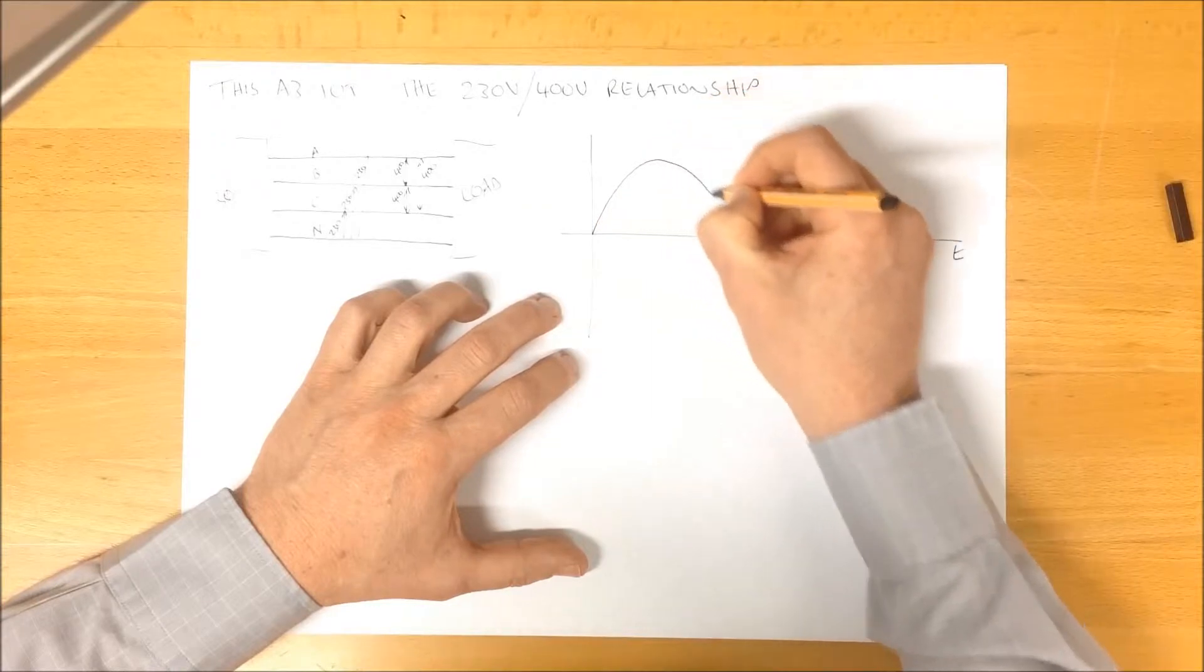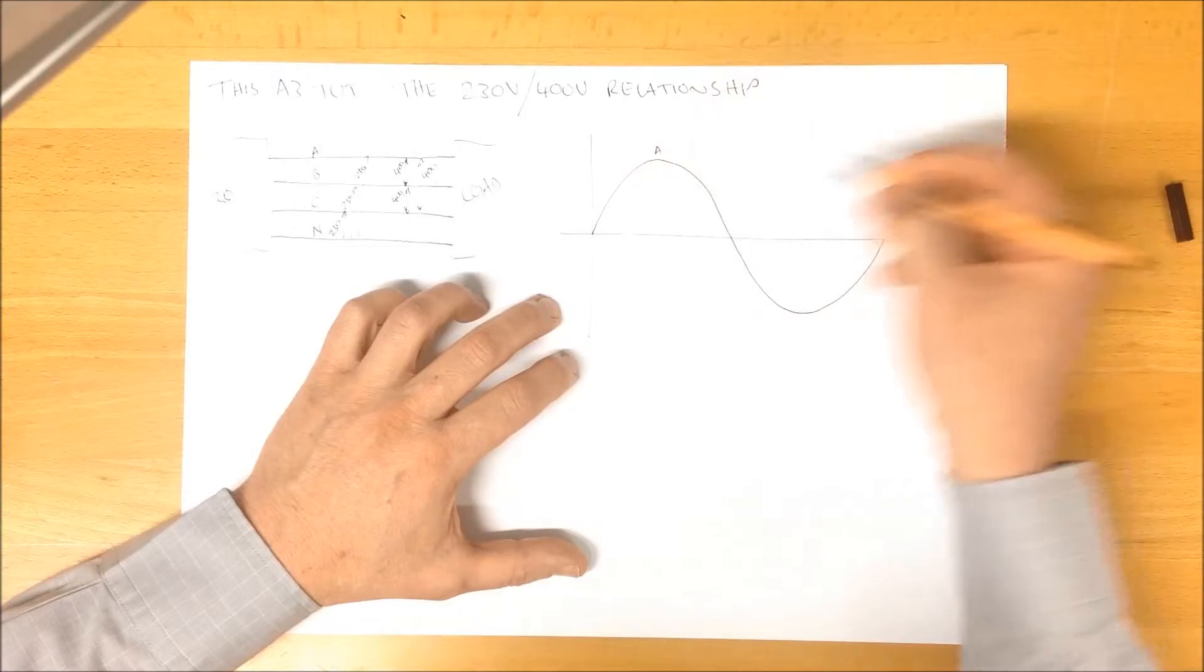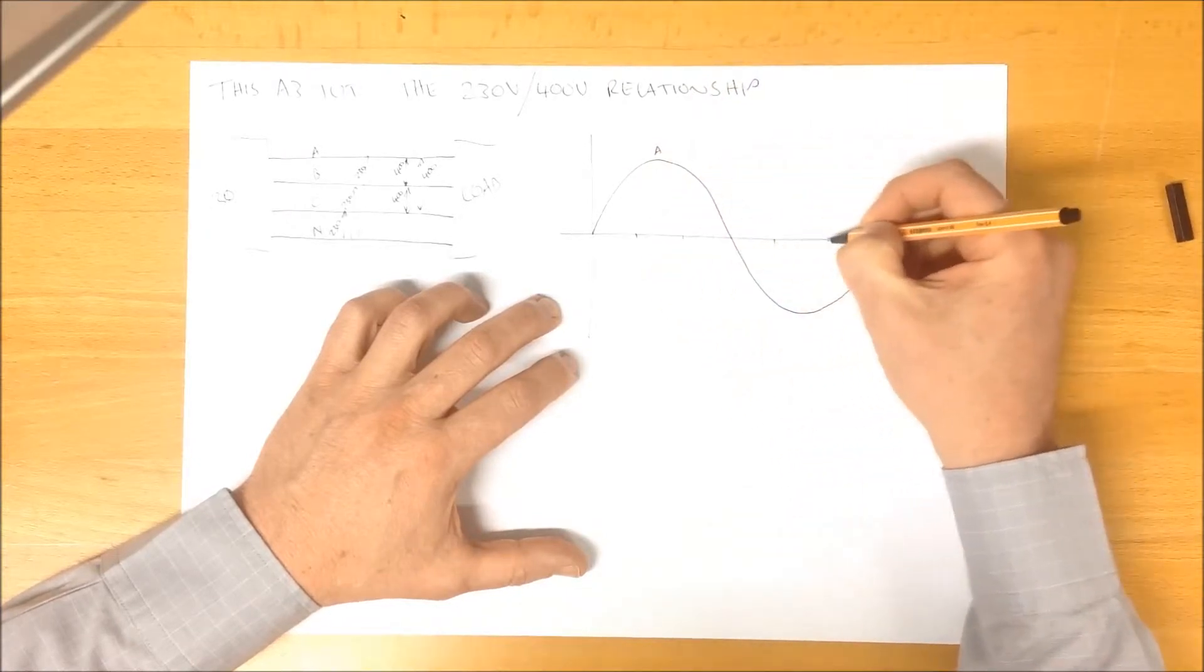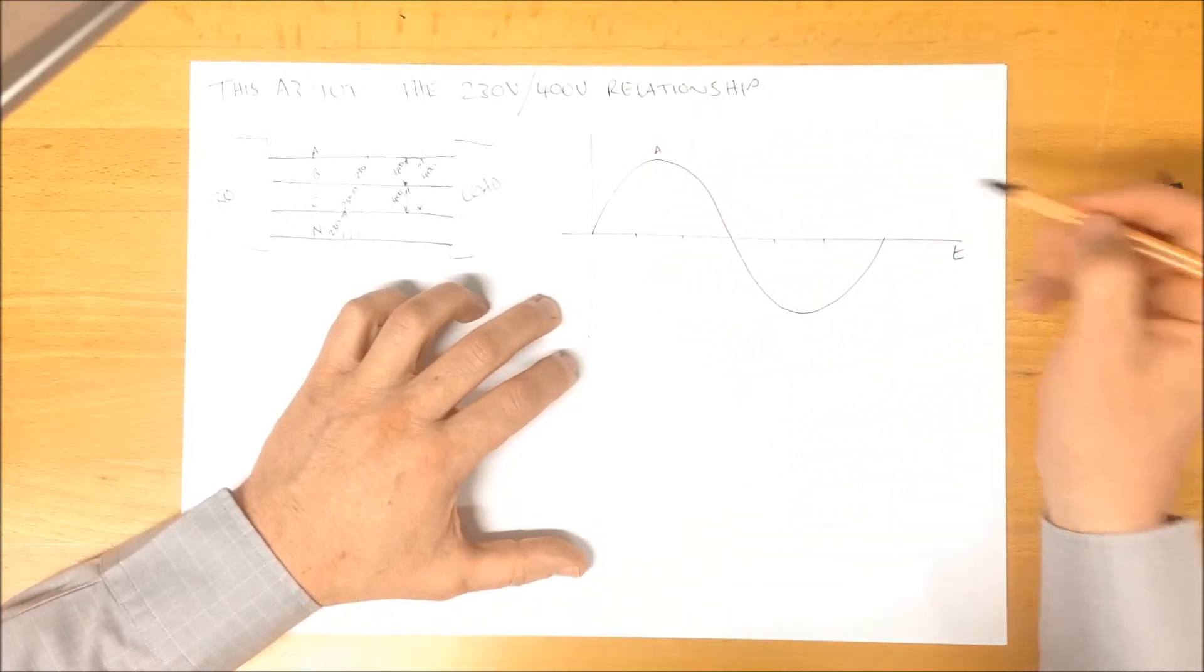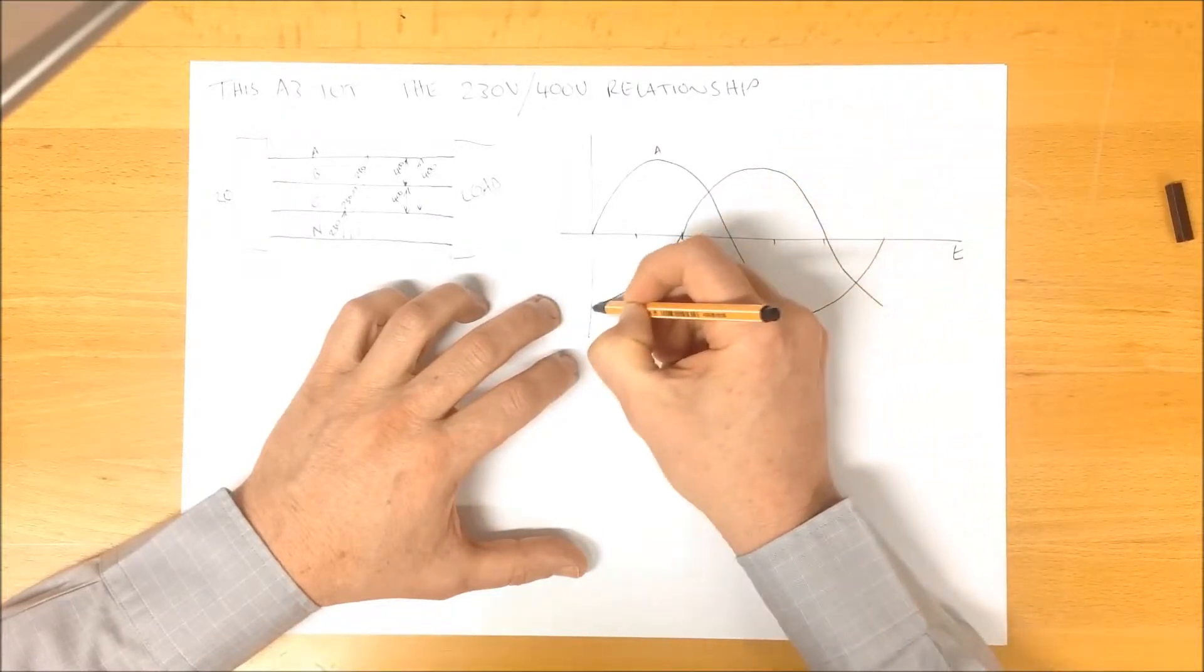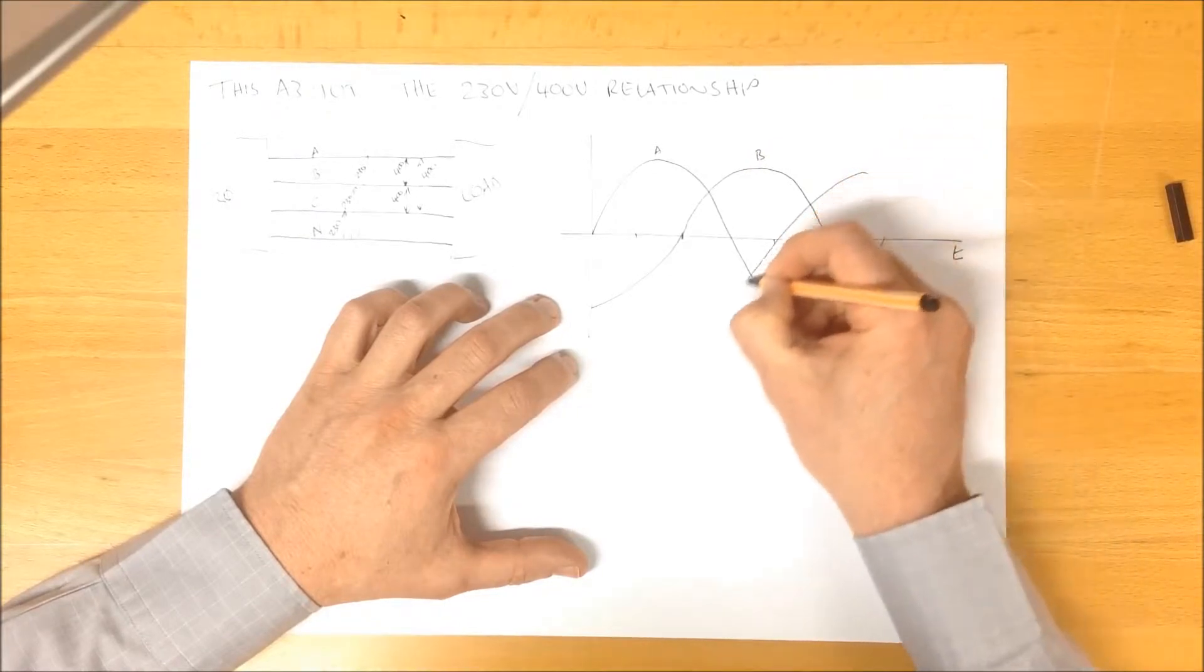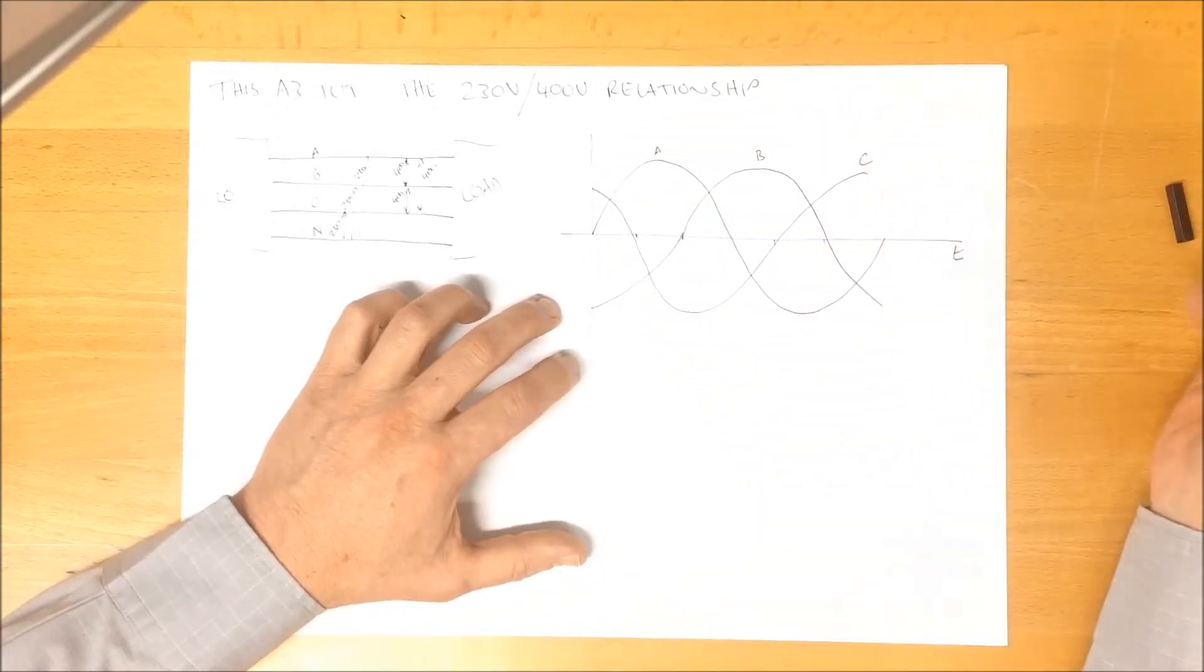We would see a sine wave of phase A. And if we were to put another oscilloscope probe in there, we would see a sine wave of phase B and phase C.